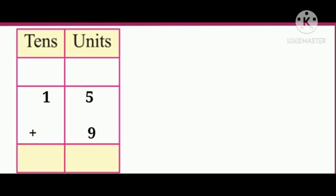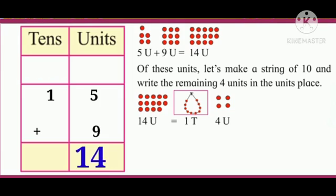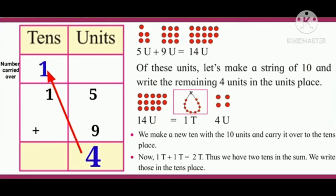Next example: 15 plus 9. Remember children, when adding numbers, first add the numbers in the units place. 5 units plus 9 units is equal to 14 units. Of these units, let's make a string of 10 and write the remaining 4 units in the units place. 14 units is equal to 1 ten and 4 units. We make a new ten with the 10 units and carry it over to the tens place.